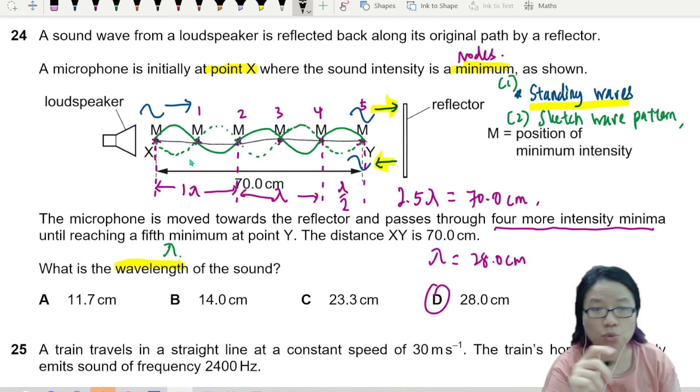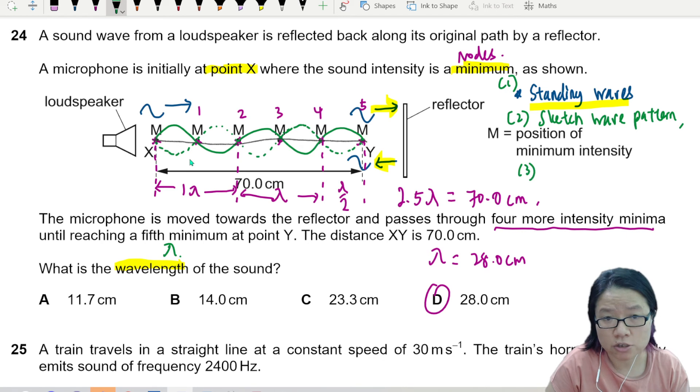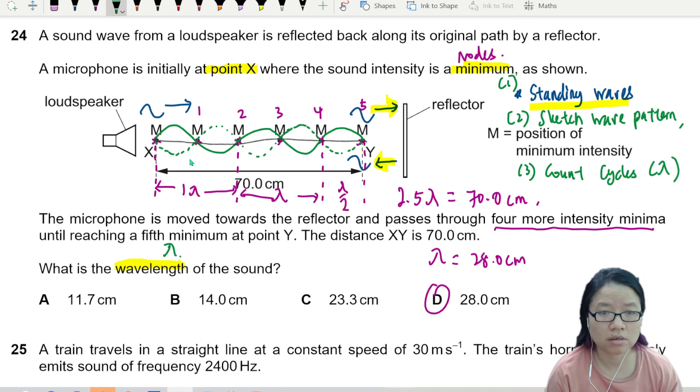So once you sketch the wave pattern, step number three is to determine the number of wavelengths. So count the cycles. One cycle, one lambda. And then from there, you can just write 2.5 lambda is 70 cm and work from there.